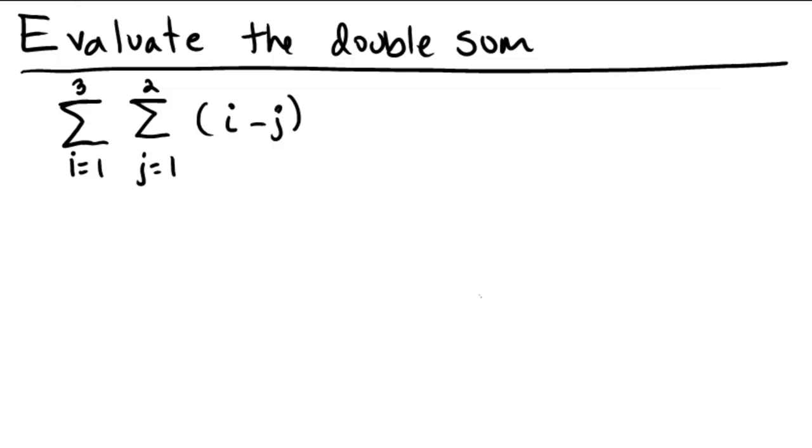Okay, so the way to interpret something like this is to start with just looking at the inside part, which is the sum over j equals 1 to 2. So we're going to keep that i summation out in front and say the sum of i equals 1 to 3.